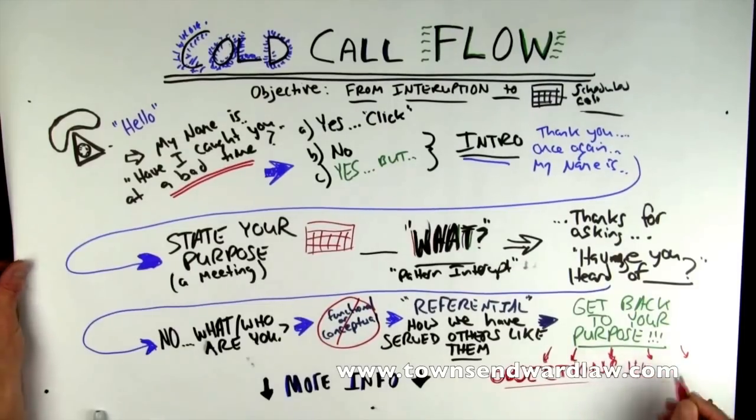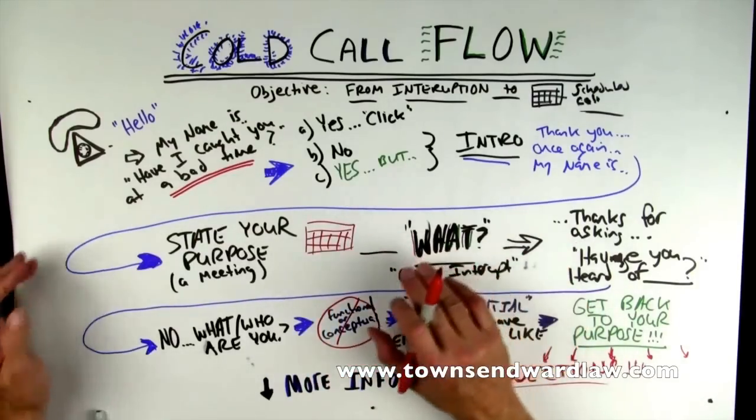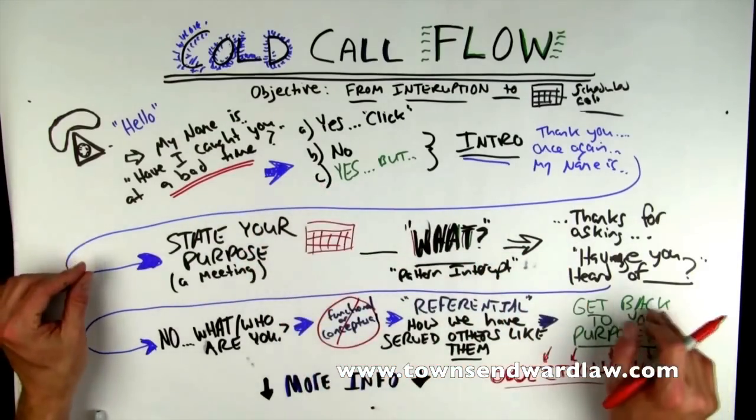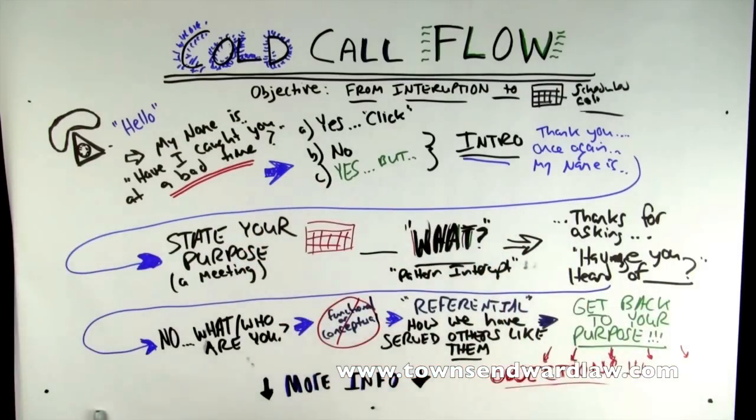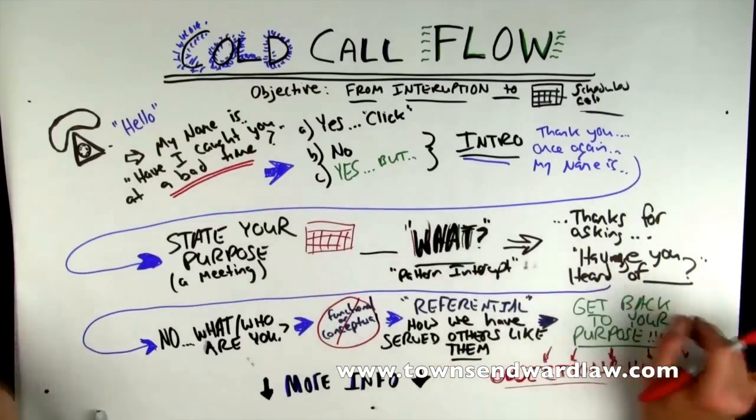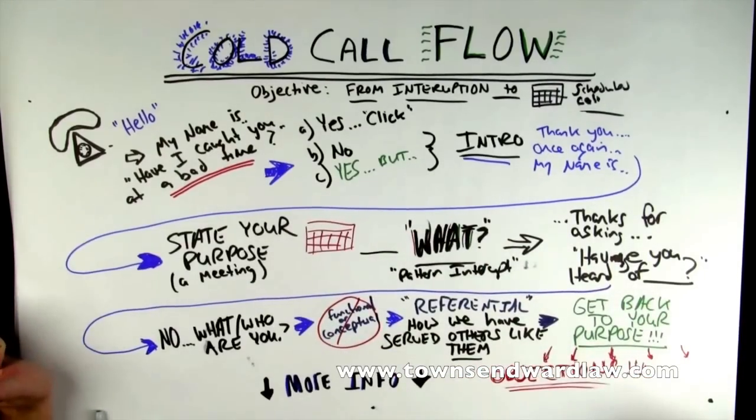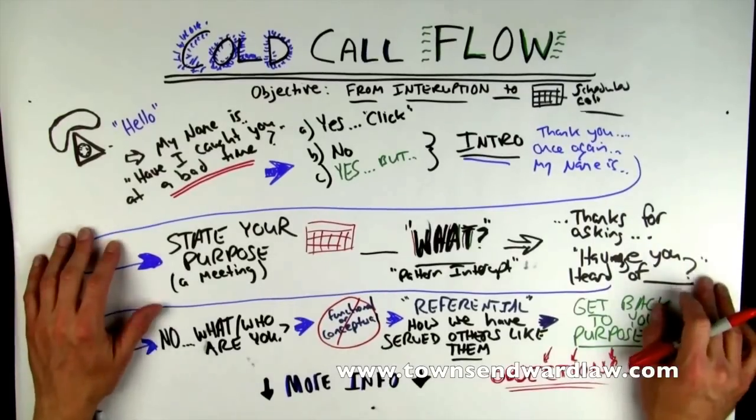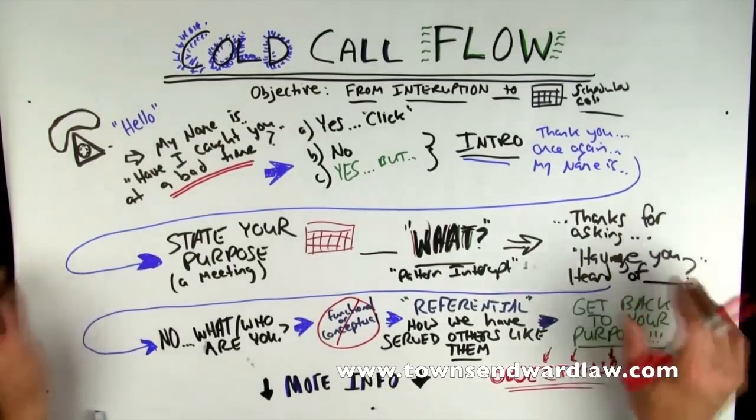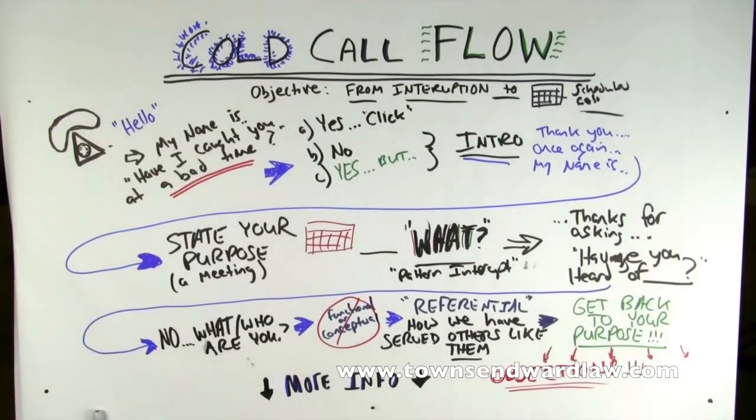You need to learn how to deal with objections. But if you follow this process step-by-step, you're going to have a minimum amount of divergence from this basic script and you're going to be able to get to the point where you handle a couple objections, keep asking for the meeting, and you'll get the meeting. Hope this is helpful. Look forward to your comments and questions.